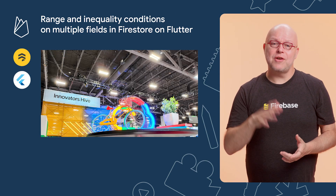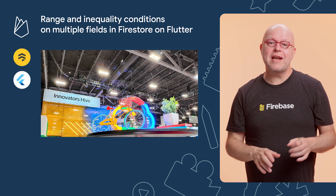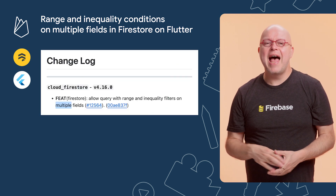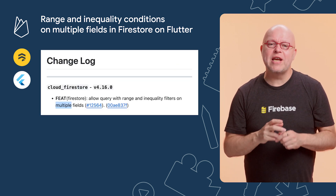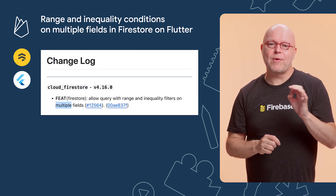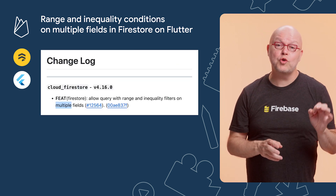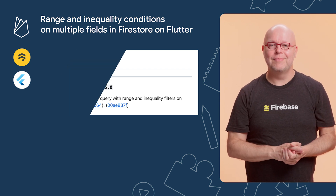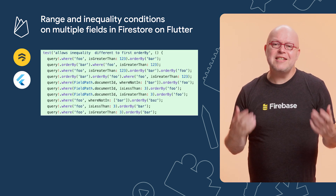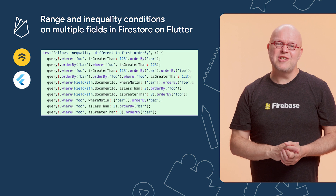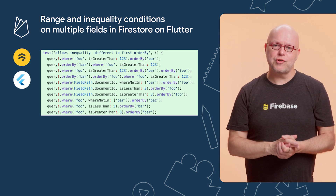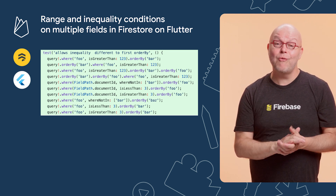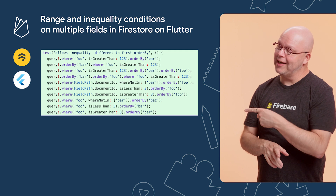At Cloud Next in Las Vegas a few weeks ago, we announced a lot of updates to Firestore, so let's go through them. You can now have inequality and range conditions on multiple fields in Firestore, and we just added this feature to our Flutter SDK too. Since the feature didn't require any API changes, it was mostly a matter of removing some assertions from our code and adding more unit tests, so that you can now write queries like these in Flutter.